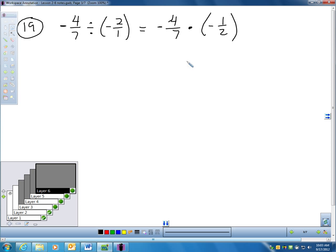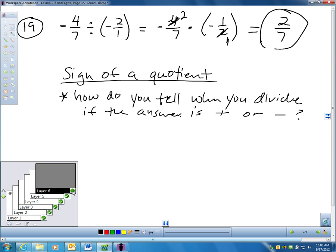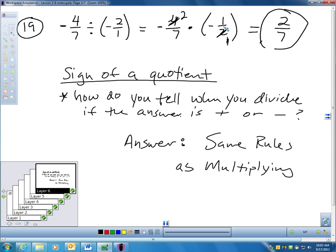So you can see I did that. I have negative 4 sevenths times negative 1 half. And then before I multiply this out, I'm going to ask myself, do I see any common factors in the numerator and denominator? Yes, I do. 2 and 4. I can divide each of these by 2 and get 2 and 1. Well, now this is easy. 2 times 1 on the top is 2. 7 times 1 on the bottom is 7. I get 2 sevenths. And negative times negative, of course, is positive.